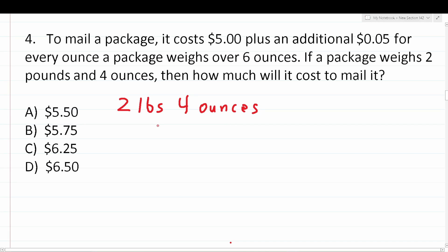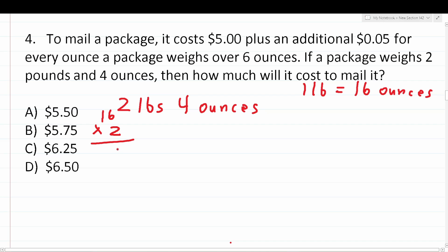Let's convert the package weight to just ounces. The package weighs two pounds and four ounces. For the ASVAB and PyCat, you have to know simple conversions — in one pound there are 16 ounces. So to convert, we take our two pounds and multiply by 16: two times 16 is 32. So two pounds and four ounces equals 32 ounces plus four ounces, which is 36 ounces.